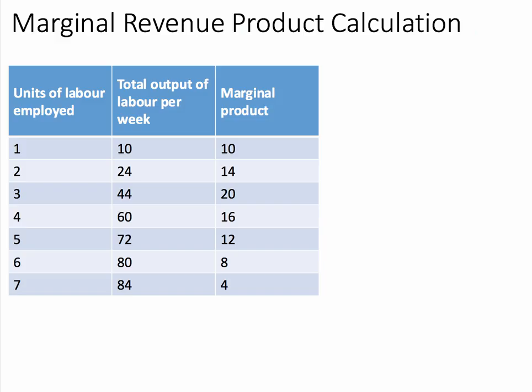Notice that from the fourth worker onwards, the marginal product is declining. This is the idea of diminishing marginal productivity, and this is assumed in the model.